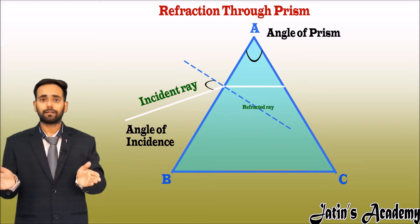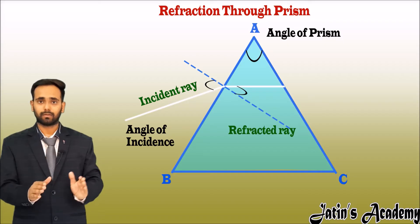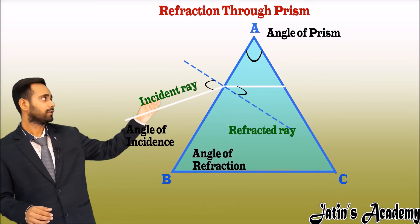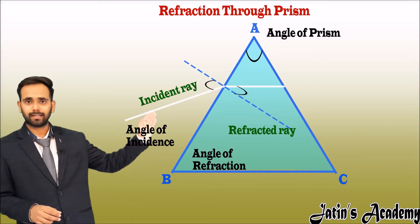This ray is now become a refracted ray. So the angle between the refracted ray and normal is nothing but the angle of refraction. This refracted ray is going towards the AC line.